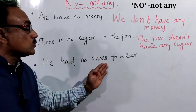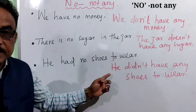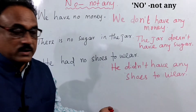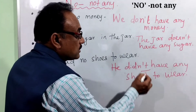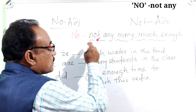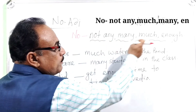He had no shoes. This means: He didn't have any shoes. Note that 'no' can be replaced by 'not any.' So 'He had no shoes' equals 'He had not any shoes' — both carry the same negative meaning.